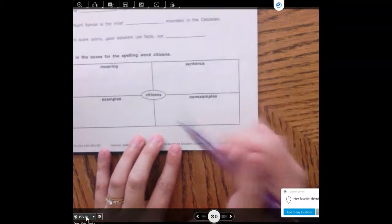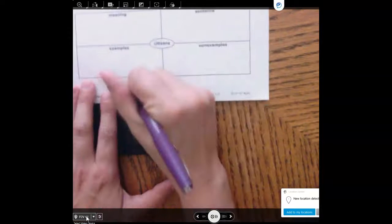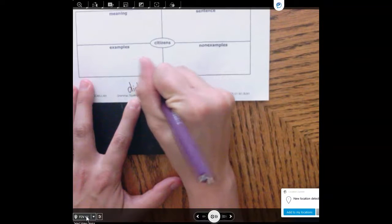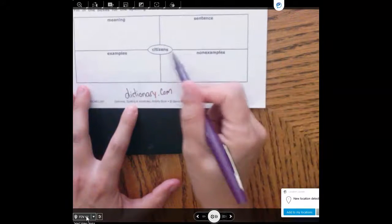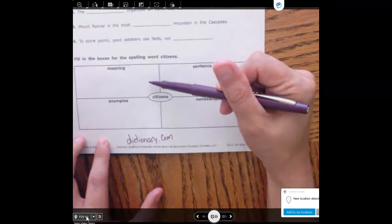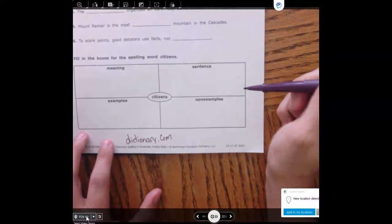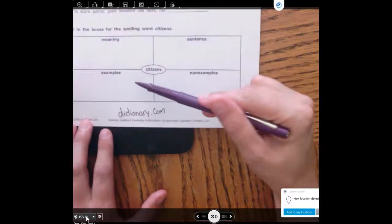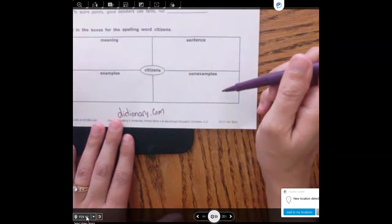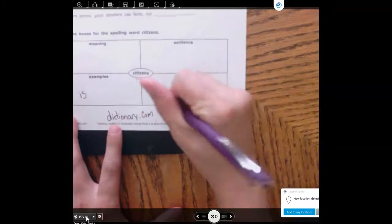So for this bottom box you're going to go to dictionary.com and you're going to type in the word citizens. Then you're going to write down the definition of the word citizens right here. Then we'd like you to use the word citizen or citizens in a sentence. Give a few examples, one or two examples of what a citizen is, and then give a few non-examples.